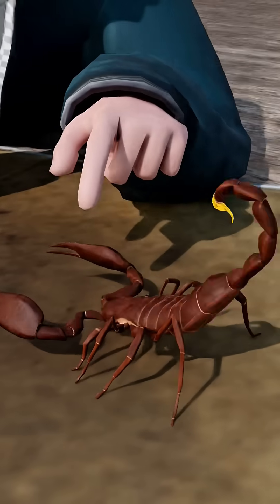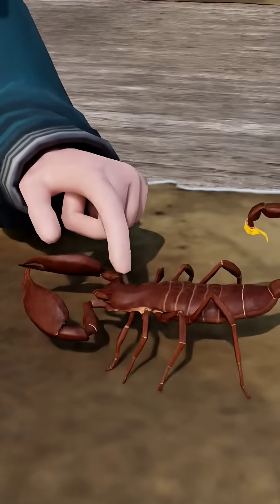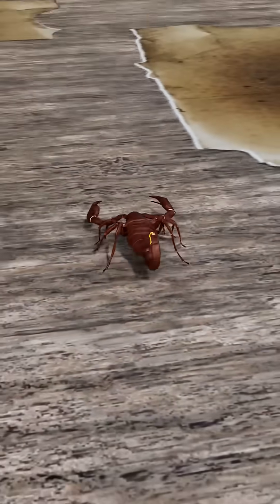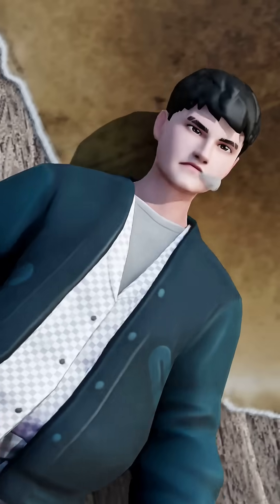When a scorpion feels threatened by a human or an animal, it sometimes stings itself, releasing its own venom. That's one reason thousands of people with weak immune systems die every year from scorpion stings.